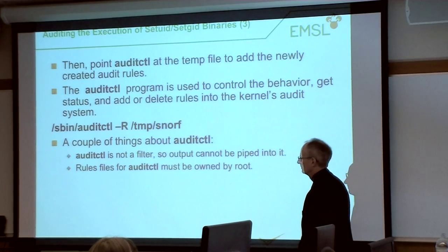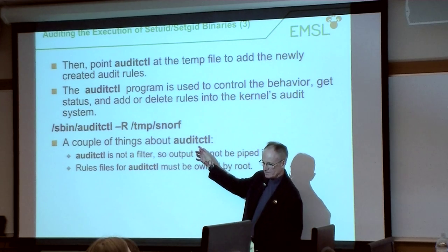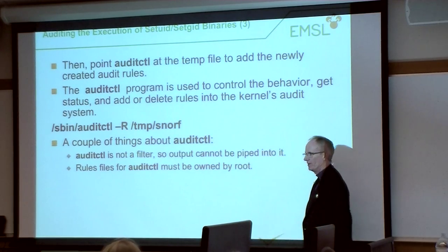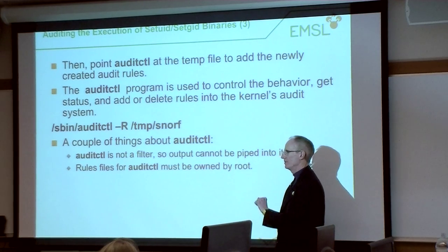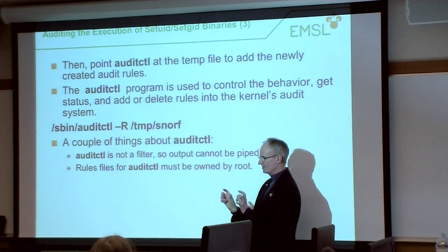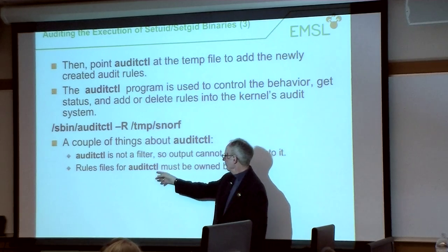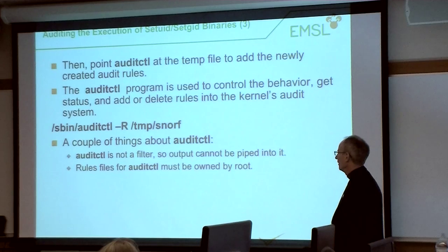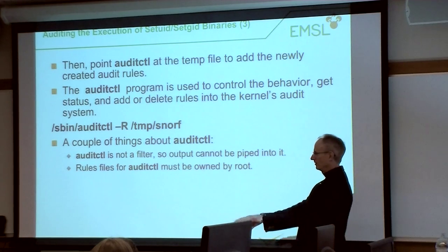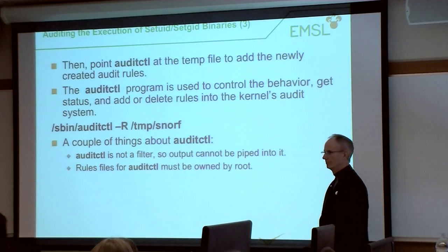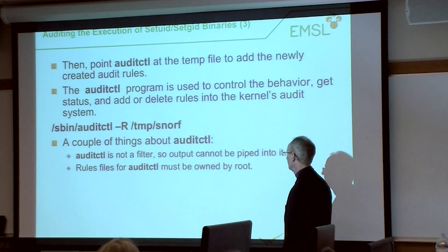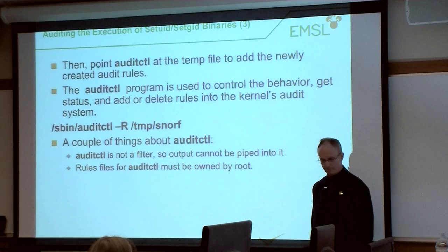A tricky thing about audit control: it is not a filter program. It doesn't read from standard in or write to standard out, so you can't pipe output directly into audit control. This is actually a security feature — it ensures there's no insecure transfer of that information. Audit control is also very picky: your rules file must be owned by root. If you're running SELinux, it must also have the right SELinux context. But for the most part, if it's owned by root, it's okay.